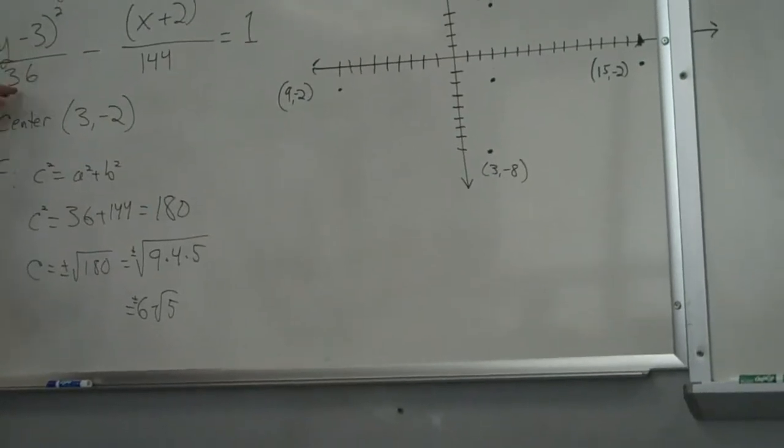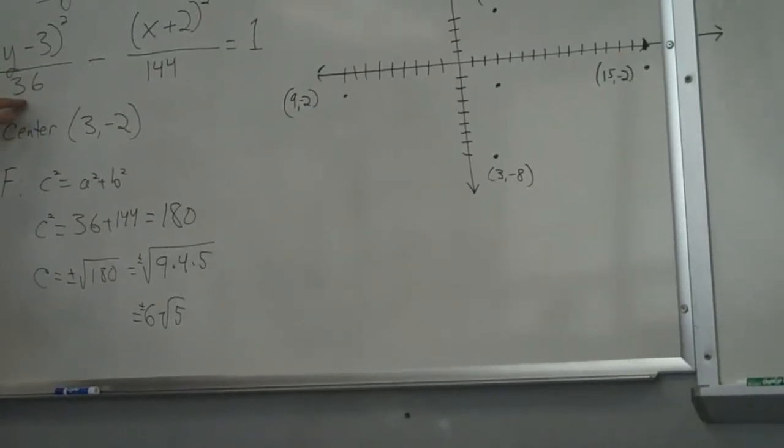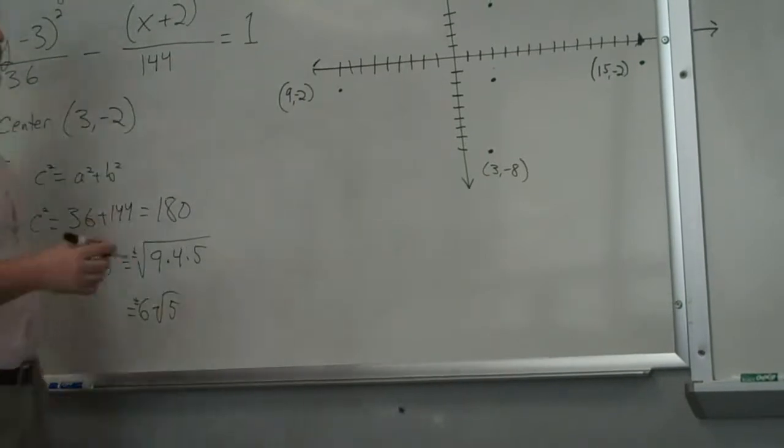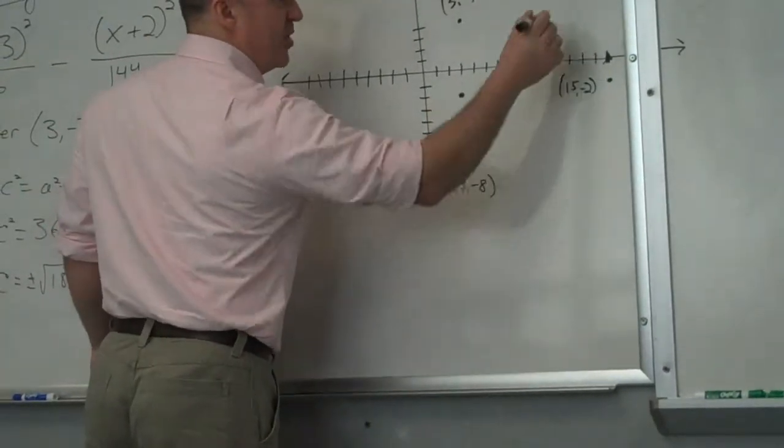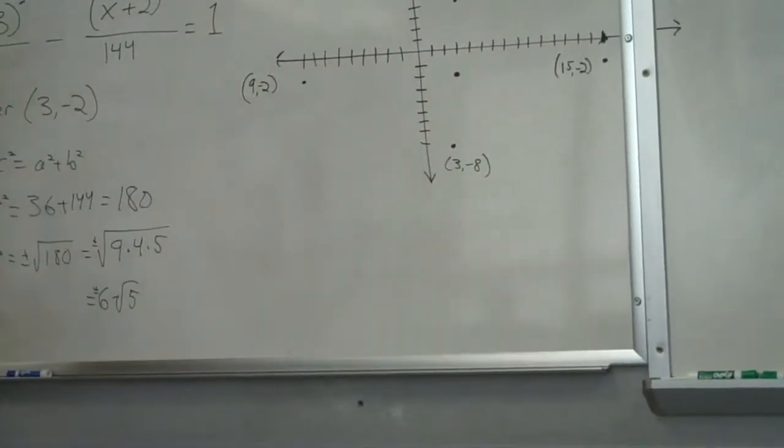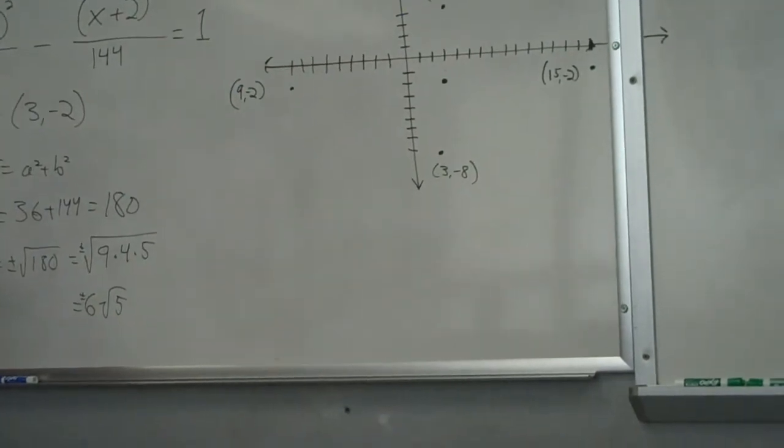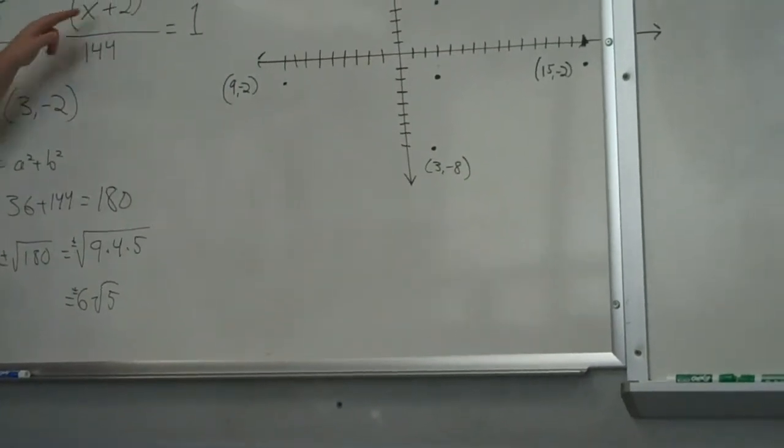This is counterintuitive. But why is the center in quadrant 4? The center is not. The center is here. These are the points that will help me draw my box. Yes, but why is the center in quadrant 4? Because it's positive 3 and negative 2.